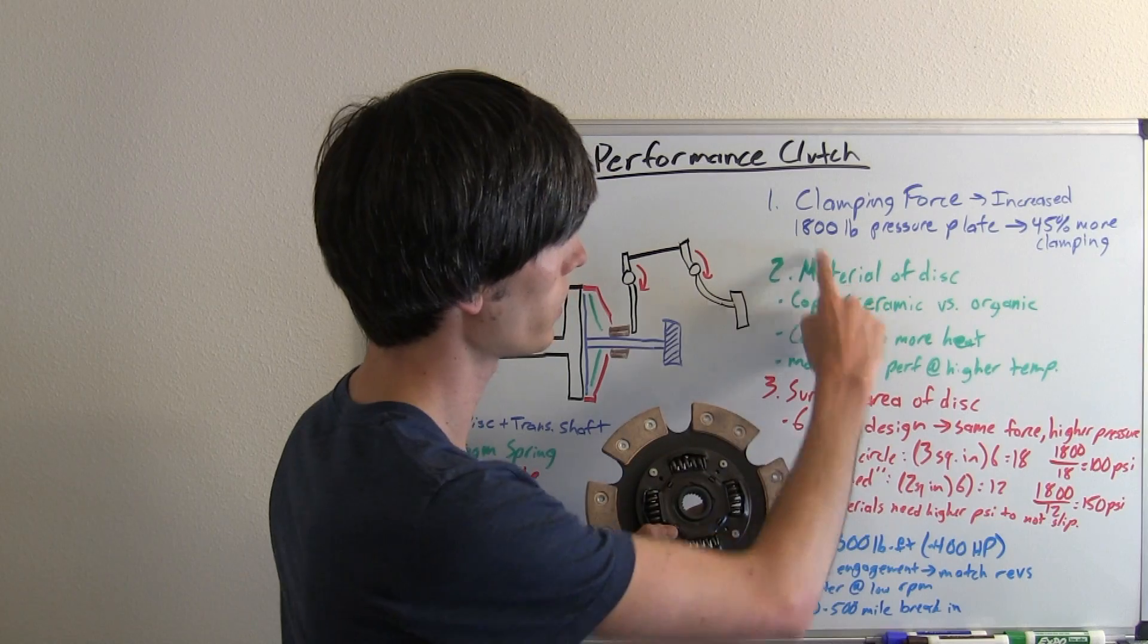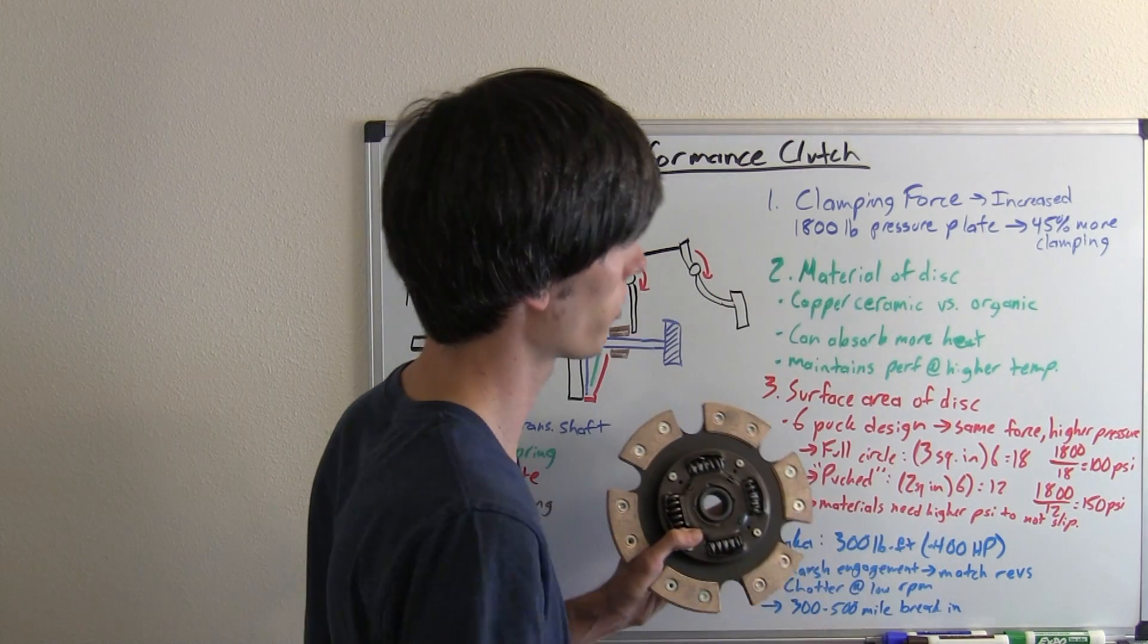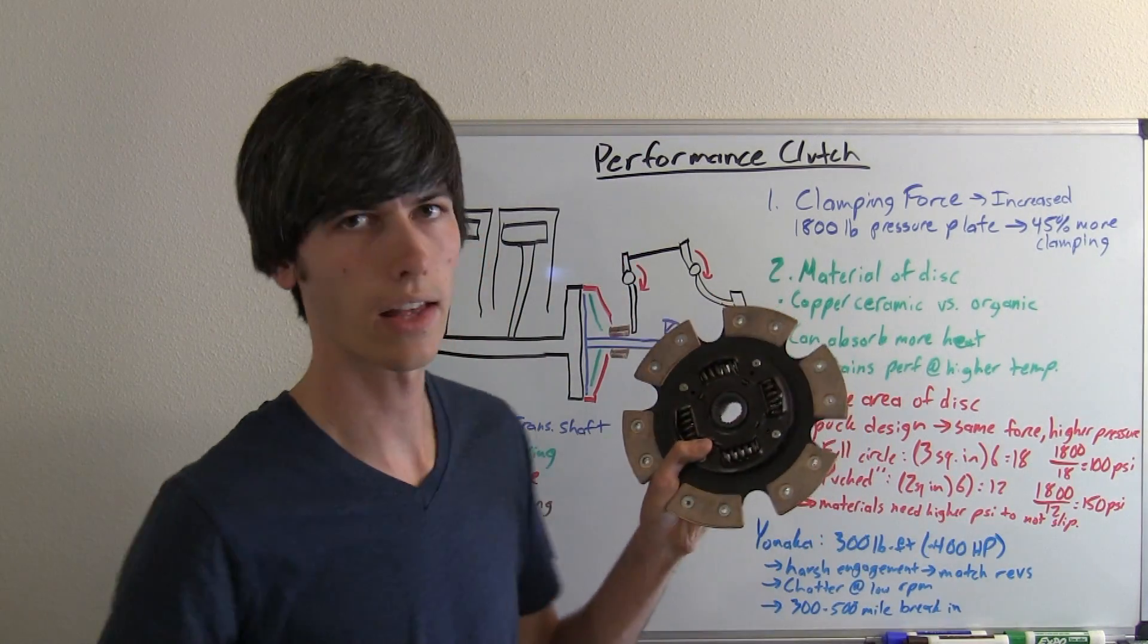So overall we've got about 18 square inches of area if this were to be a full circle clutch disc. So we've got a pressure of 1800 pound force divided by 18, that's our area and that will give us pressure.